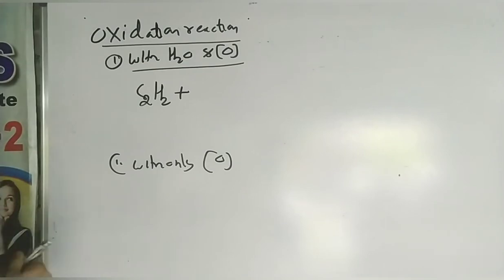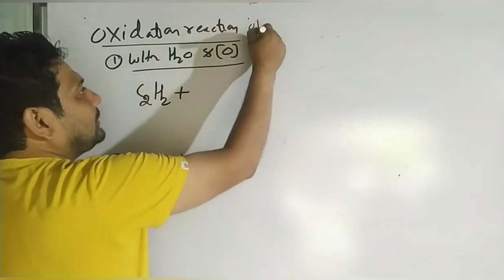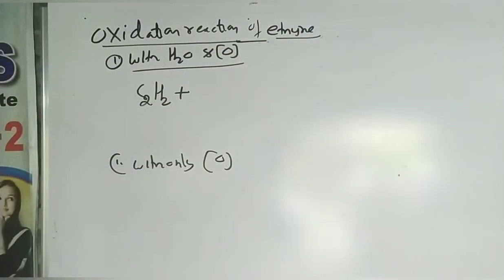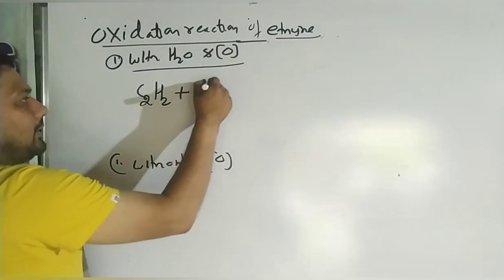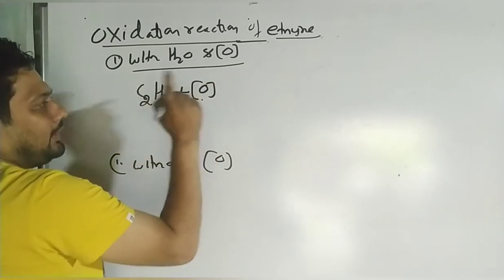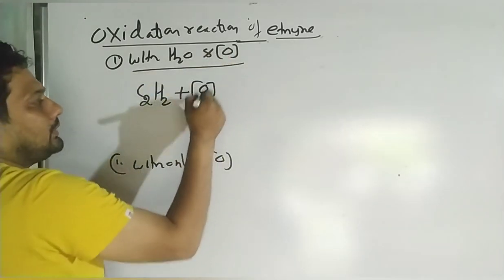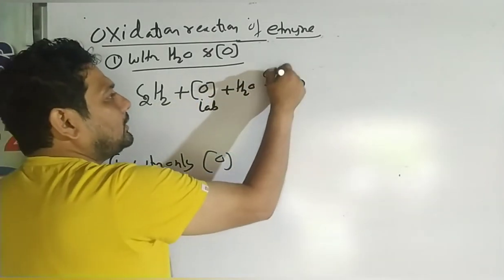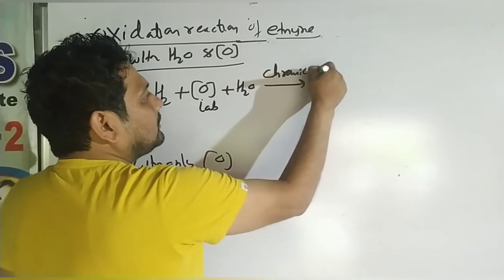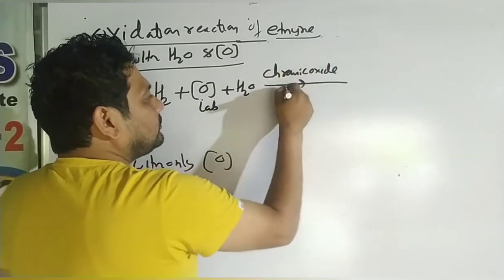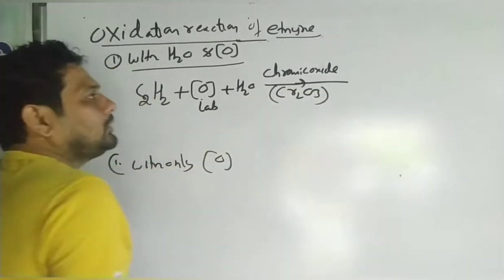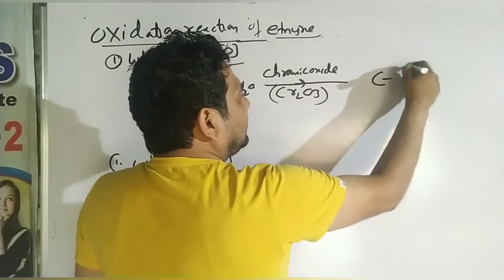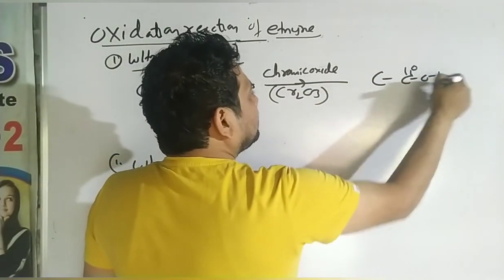Now let us do the last reaction: oxidation reaction. Addition of oxygen is called oxidation reaction. Oxidation reaction of ethyne: if ethyne reacts with oxygen and water in the presence of chromic oxide CR2O3 as catalyst, then ethenoic acid — acetic acid — is formed.